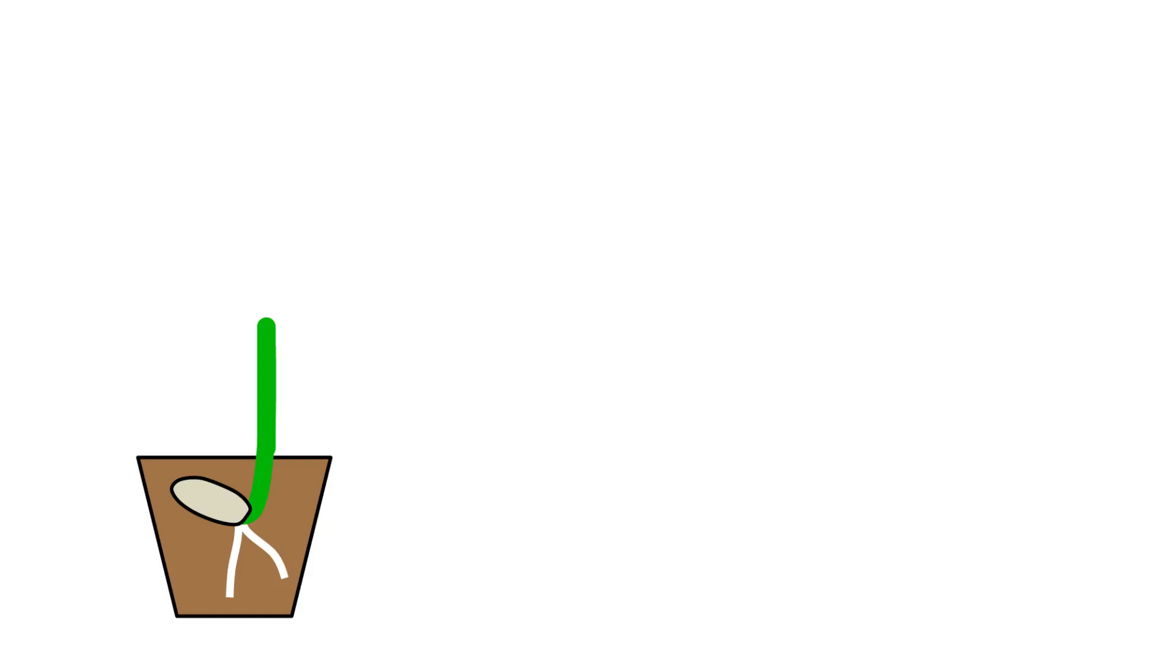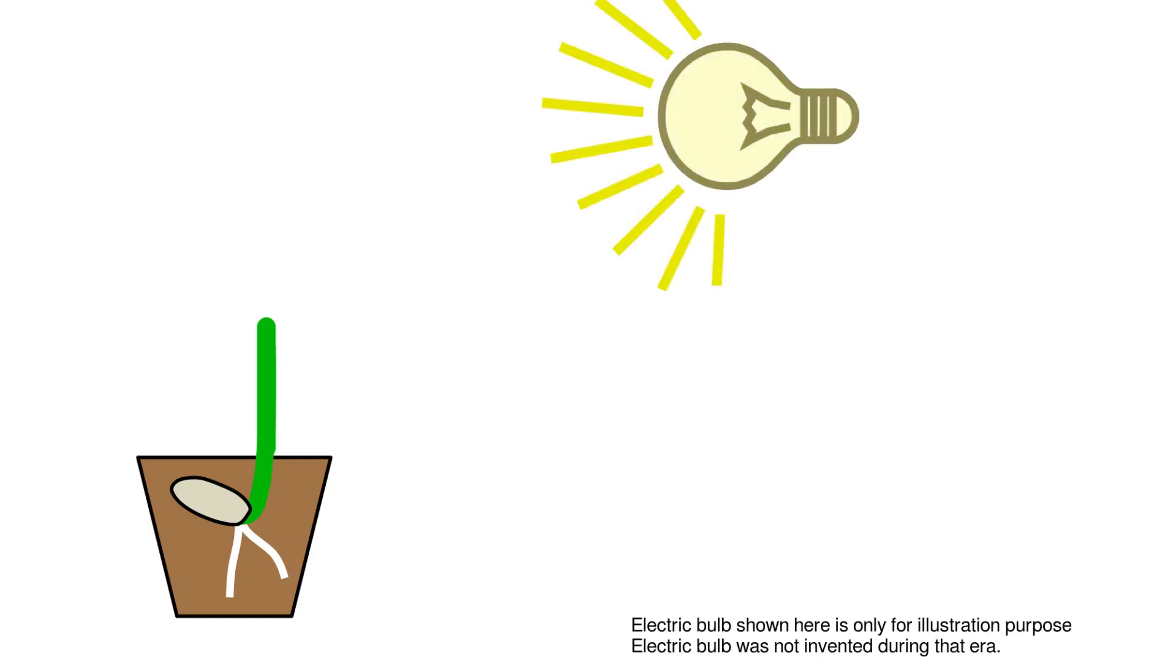He did his experiments with oat coleoptile. When the growing seeds of oat were observed carefully, he found that only the tip of the coleoptile shows bending towards the light. If the tip is removed, no bending is seen.